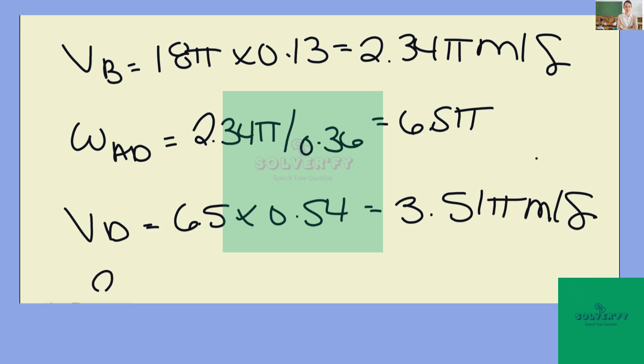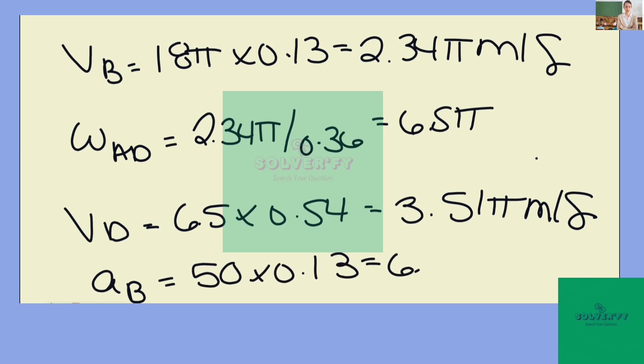Then we want to calculate the acceleration at point B. This is going to be 50 times 0.13, which will give us 6.5 meters per second squared.